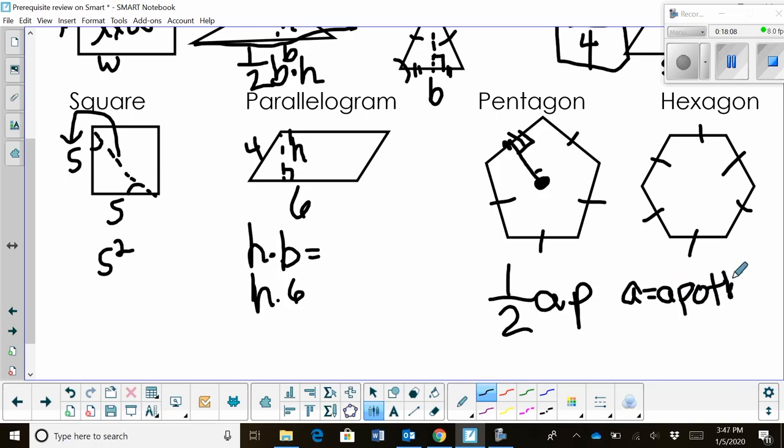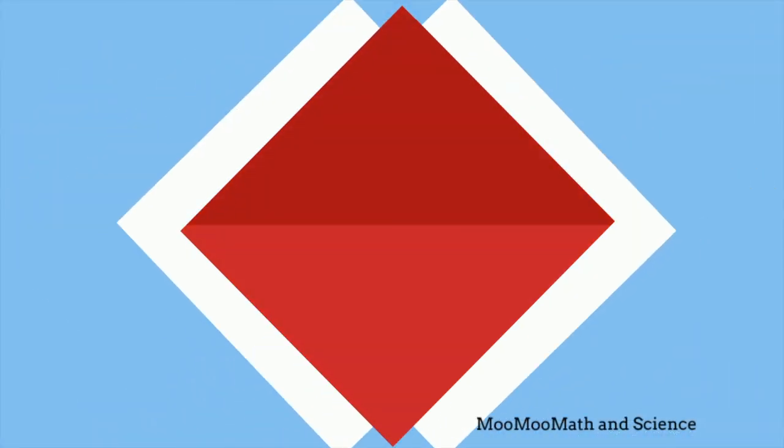So p is your perimeter of the entire polygon. We're going to be working through a few of those in the prerequisite packet, but you may have to use a little trig to figure out that apothem to find the area. Those are your area formulas you need.